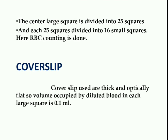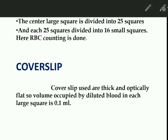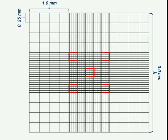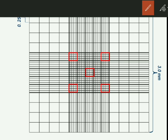The center large square is divided into 25 squares, and those 25 squares are further divided into 16 small squares where RBC counting is done. The coverslip used here is a special type which is optically flat, so the volume occupied by diluted blood in each large square is 0.1 mm³. This is one side of the Neubauer chamber.